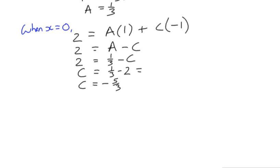Remember that 2 in terms of thirds would be 6 thirds. And therefore, 1 subtract 6 is negative 5 thirds. So we've got A is 1 third. We've got C equals negative 5 thirds.